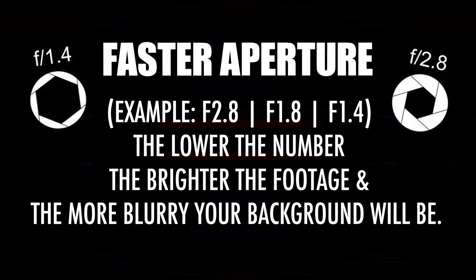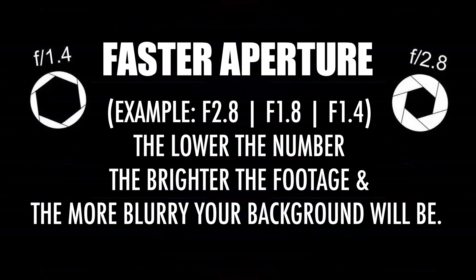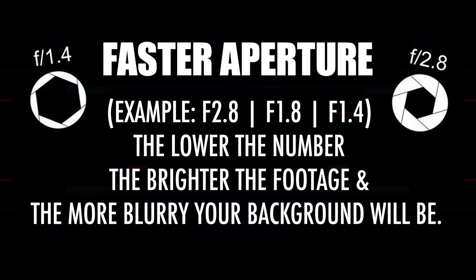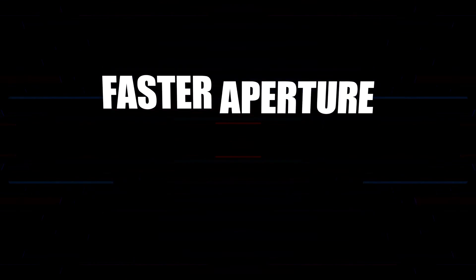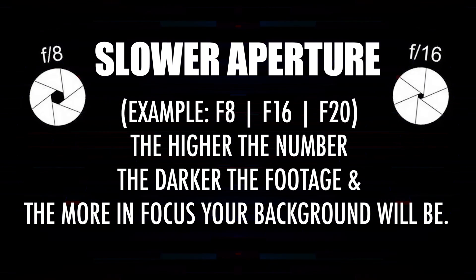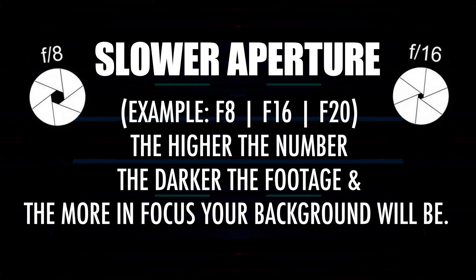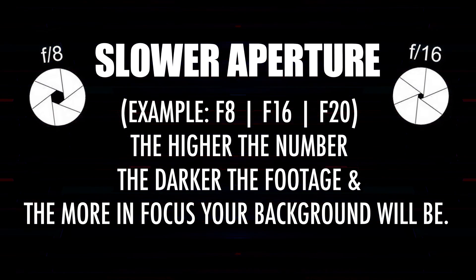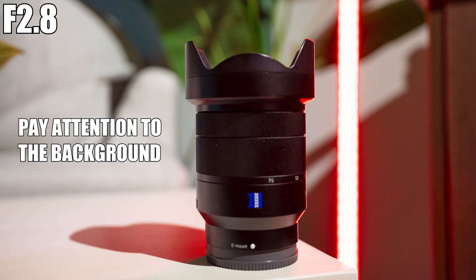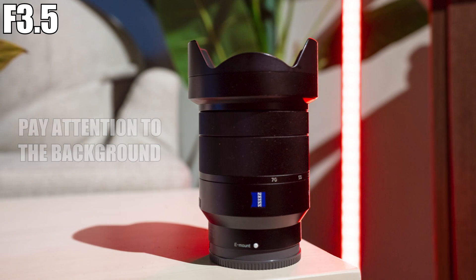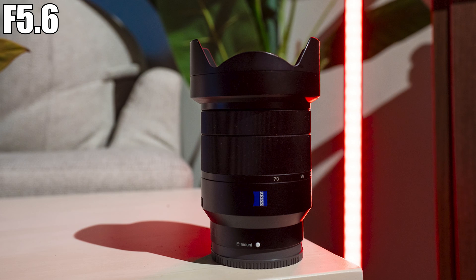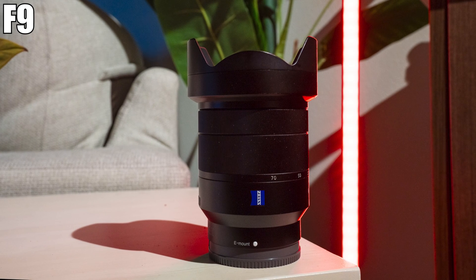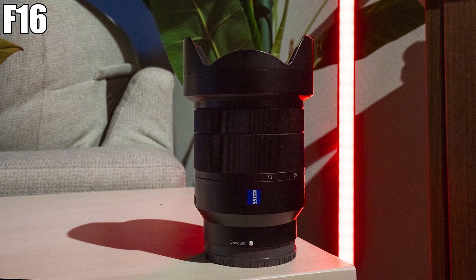Basically, the lower the numbers — such as f2.8, f1.8, or f1.4 — the more depth and the brighter your footage is going to be. While the opposite takes place with higher numbers like f8, f16, or f20 — the darker and more in focus your footage will be. I think this is best demonstrated by putting a camera on a tripod and focusing on a subject, then slowly adjusting your aperture from the lowest number to the highest number, and watching the blurry background become more in focus as the footage gets darker at the same time. To recap: your footage will be brighter and have more depth the lower the aperture number is, and your footage will be darker and more in focus the higher the aperture number is.